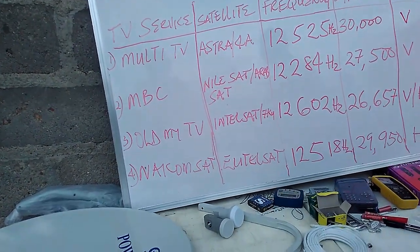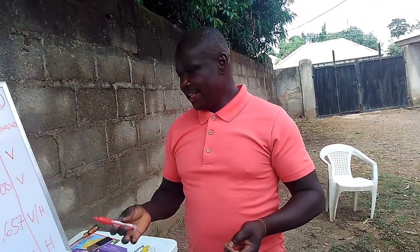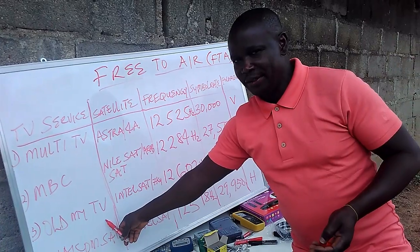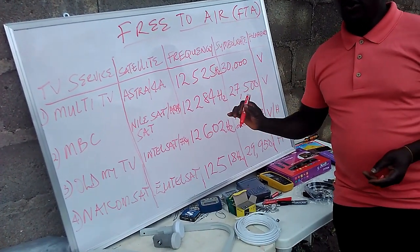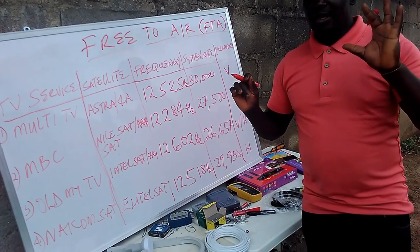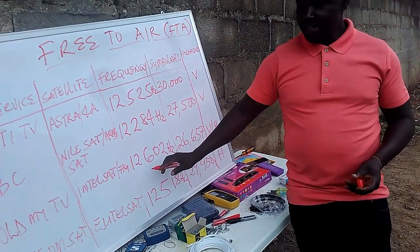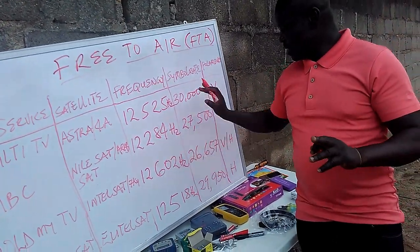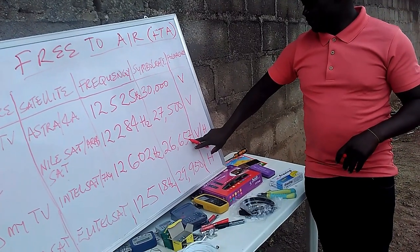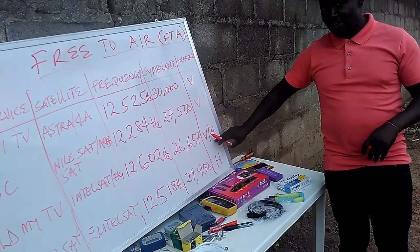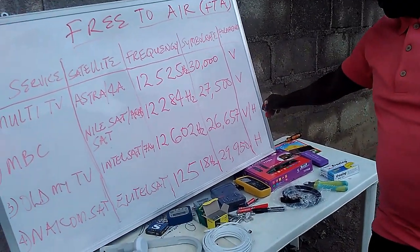Then we have the Old My TV, which carries mostly Christian channels that we normally watch our church programs on. The satellite is IntelSat 7KU, 10KU, 20KU, 21KU. The frequency is 12,602 Hz. The symbol rate is 26,657. The polarization is either vertical or horizontal.